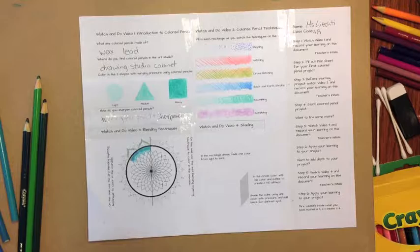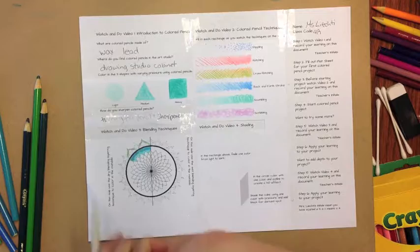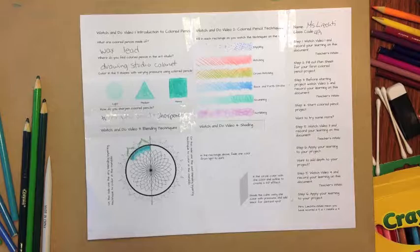The last one on the dry technique is with a blending stick. This is a blending stick here. You want to find one that hasn't been used or if it has been used, talk to me and we'll talk about how to remove the paper so that it can be fresh for you and then pick your colors.